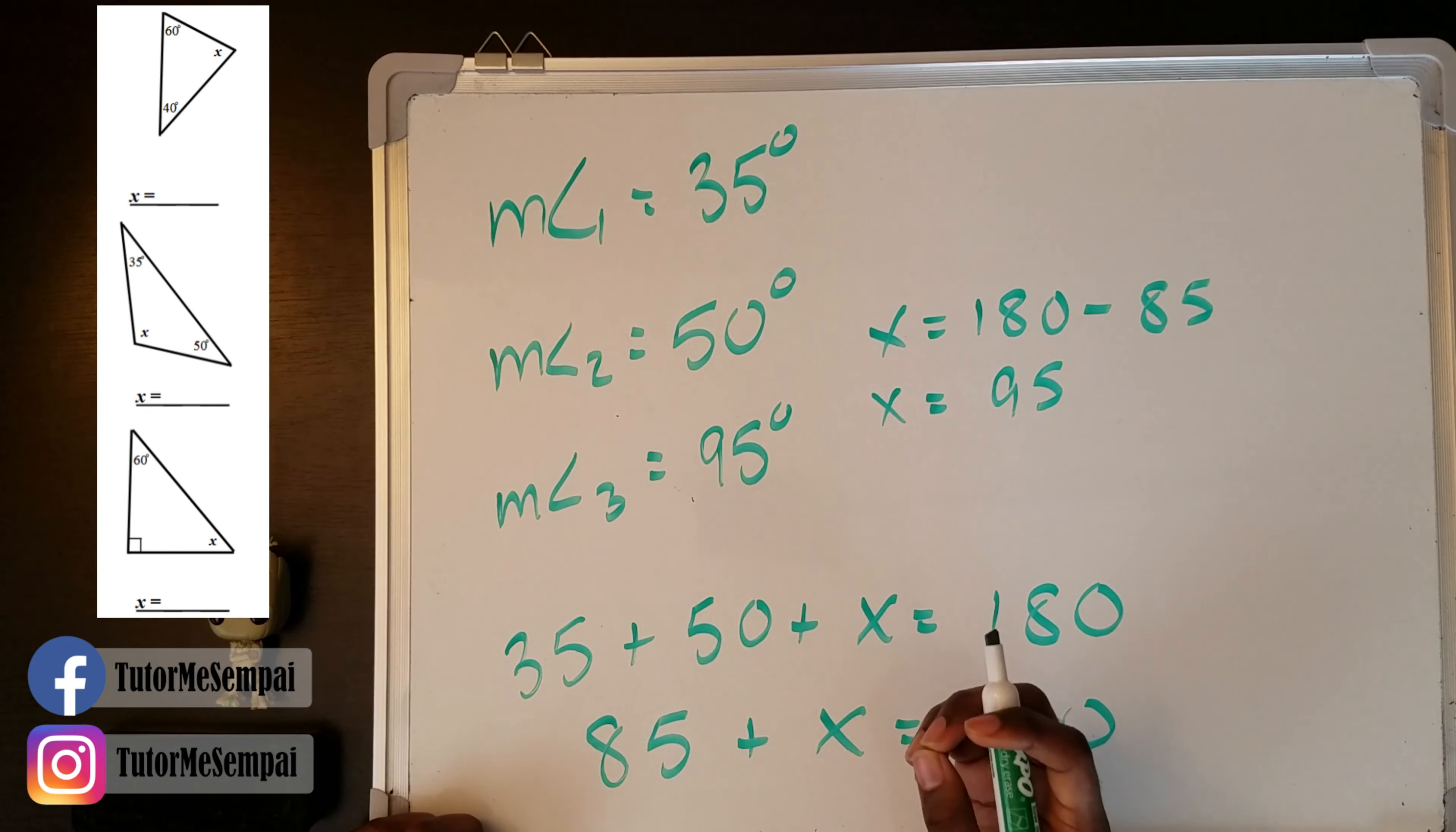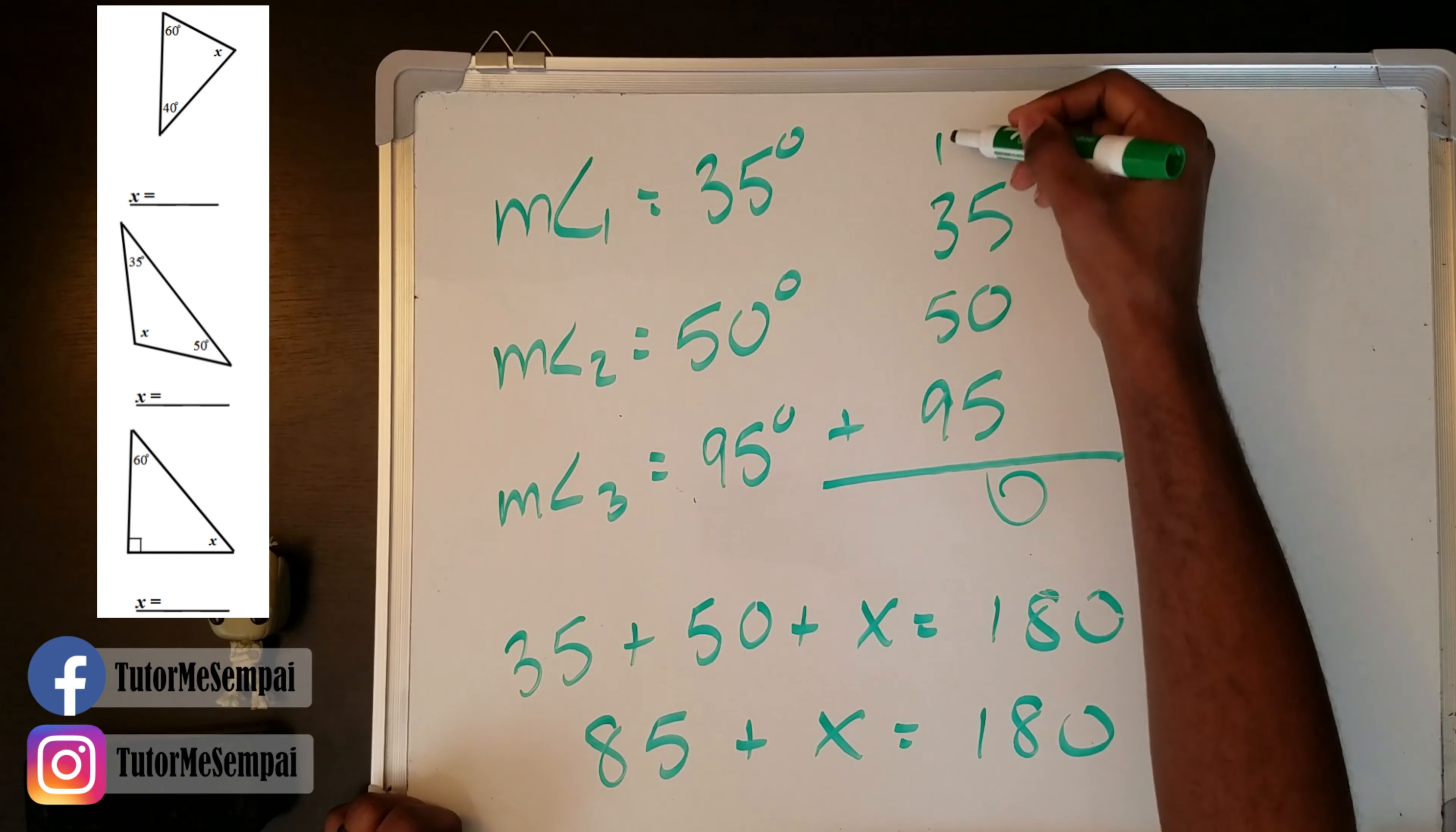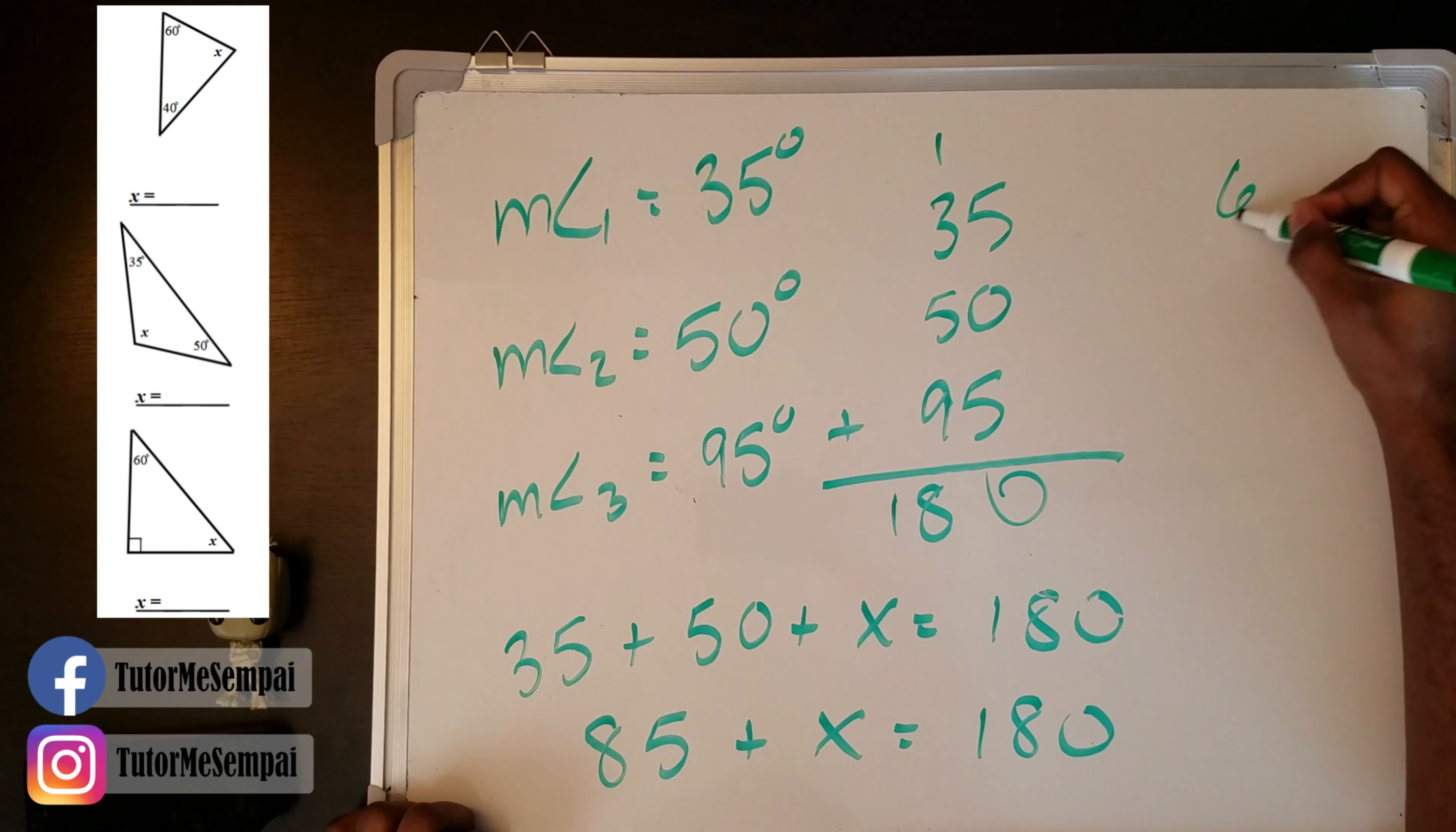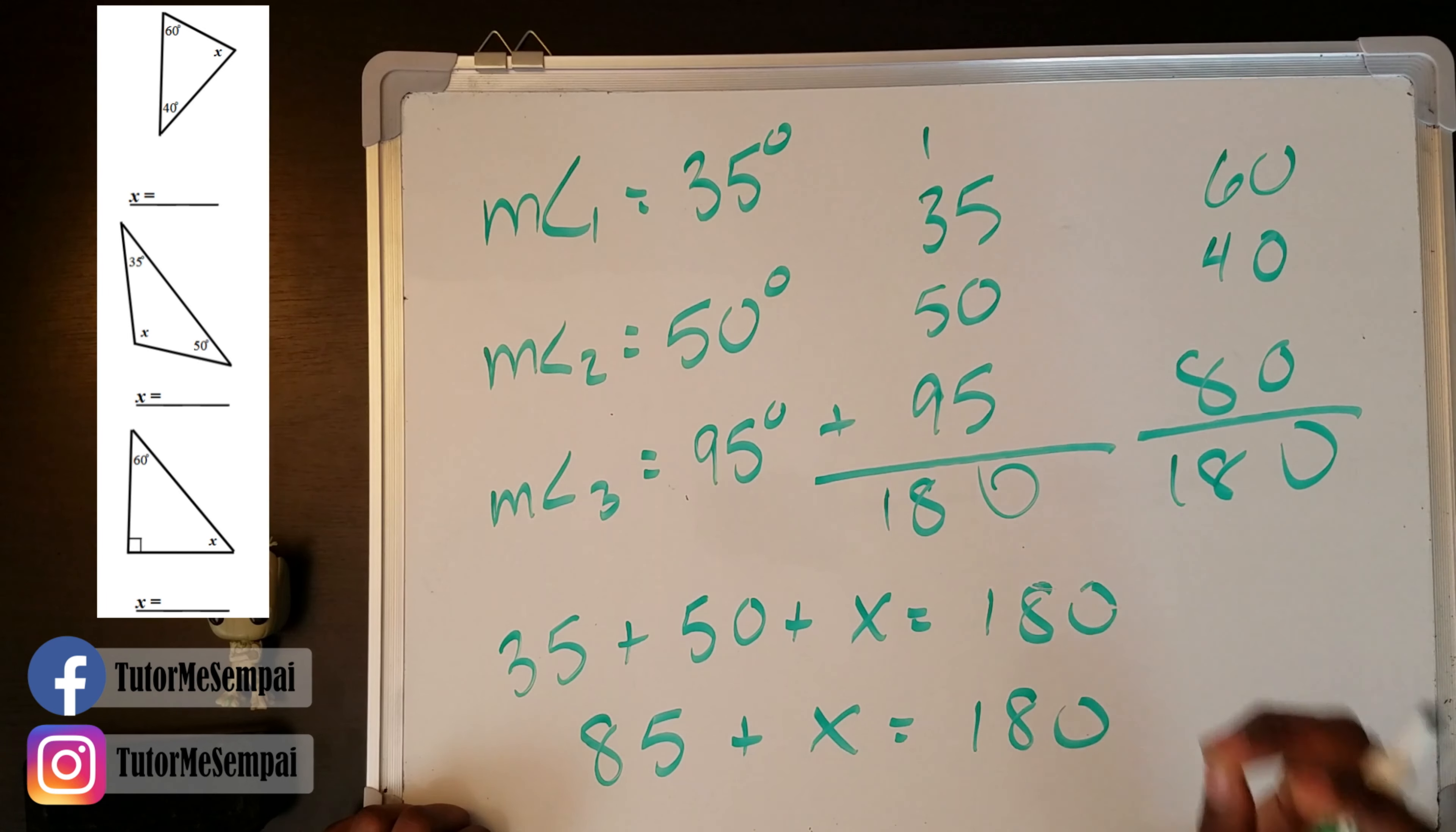We're going to add all these up and make sure that they actually do equal 180. So you have your 35, we have your 50, and we have your 95. And when you're adding all these up, that gives you 10. Carry that over. 1 plus this 9 is 10. 3 plus 5 is 8. So that gives you the 18. Hence, your 180. And going back to our first one, that was 60 plus this 40 plus the 80. And that's 10. That's 8, 18. Once again, it checks out. So make sure you're always checking your work. Even if it's really simple, make sure you don't miss anything. Check your work. Everything should add up.